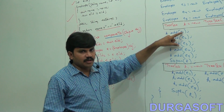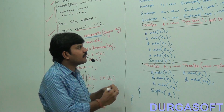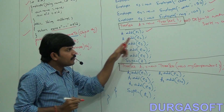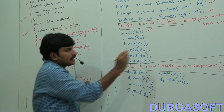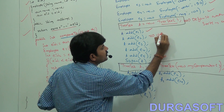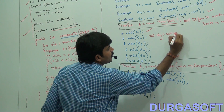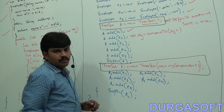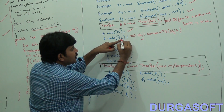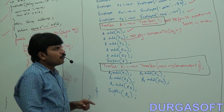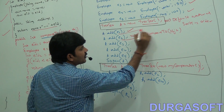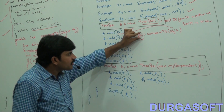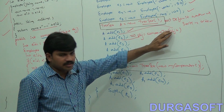We must provide implementation for compareTo. Observe: T.add(E1), T.add(E2). Whenever we are adding E2, internally OBJ1.compareTo(OBJ2) is called. OBJ1 is the object we are trying to add; OBJ2 is the object already available in the set.